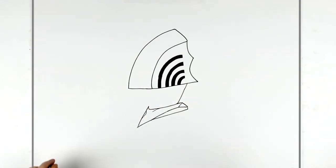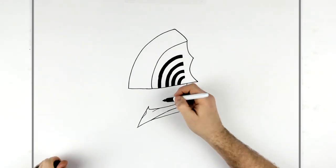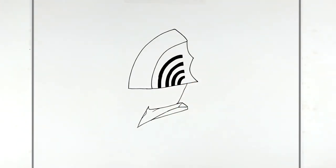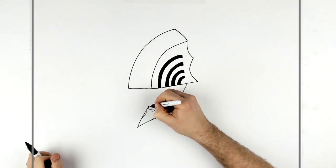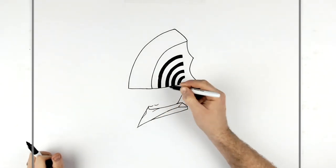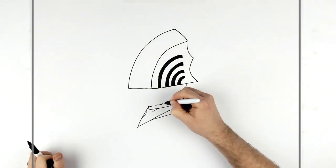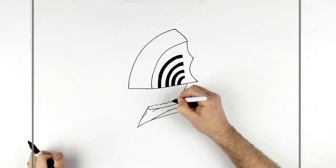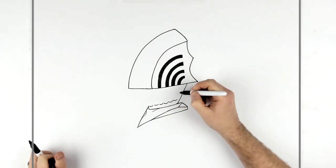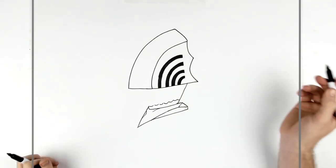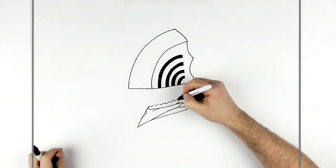And then all those teeth. So we got like one, two, three, four, five, six, and a small one there. Each of these is a sharp tooth.